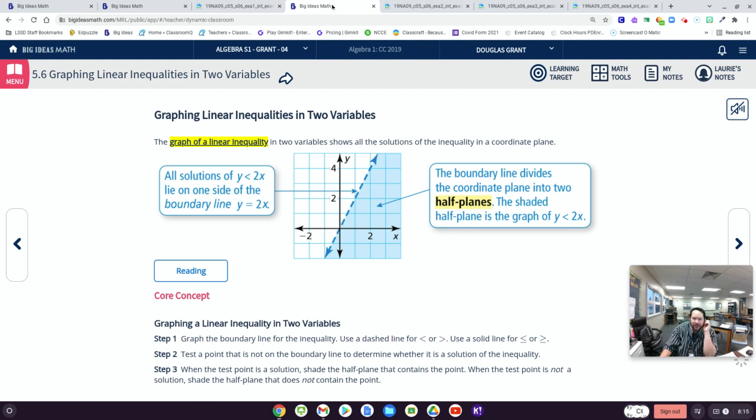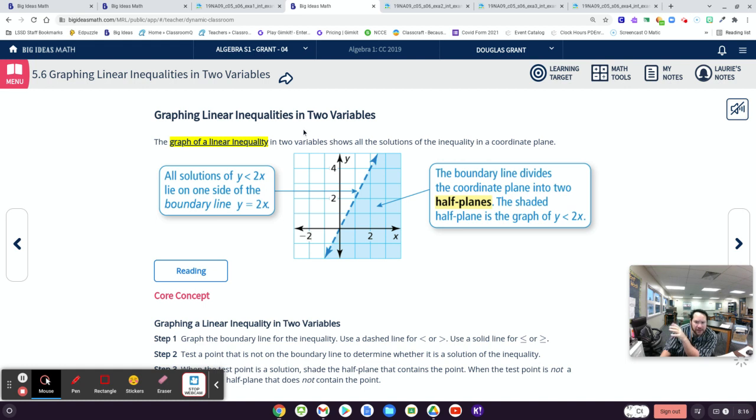Okay, so now we're going to get into graphing these things. More notes. So to graph linear inequalities, basically what you're going to do is graph like y equals mx plus b to get the line. And then the only two things you got to do that are different than graphing a regular line is you have to decide if your line is going to be a solid line or a dotted line.